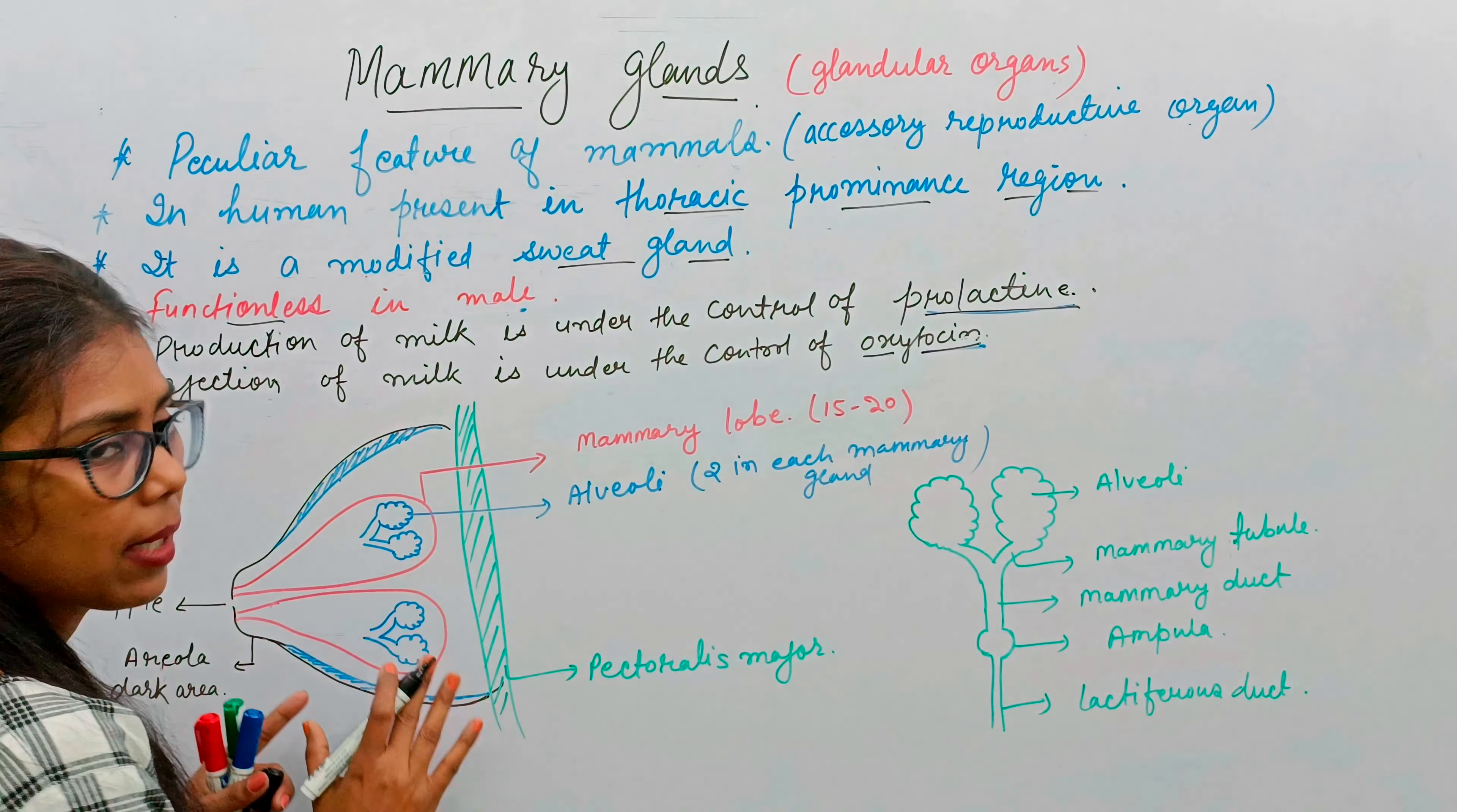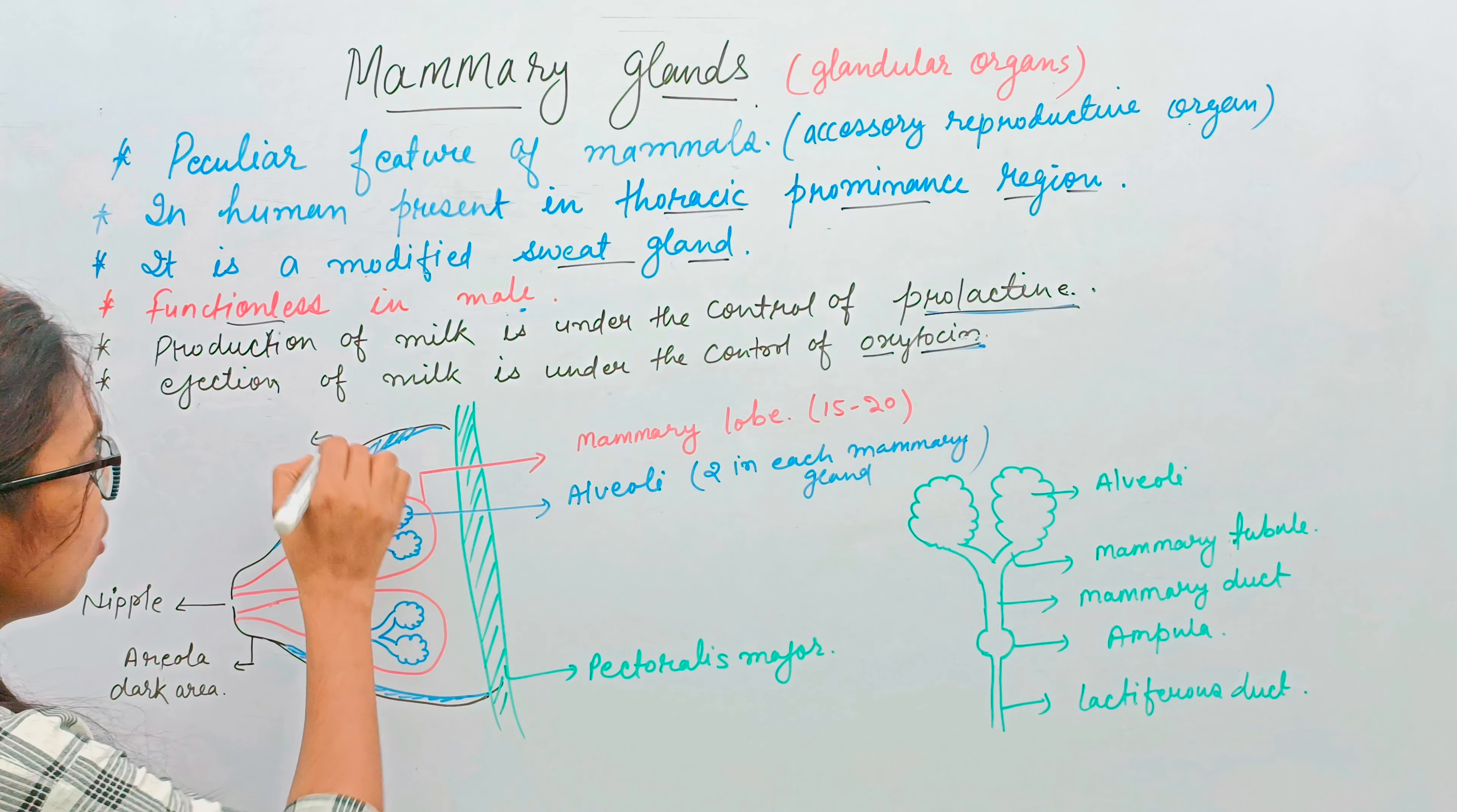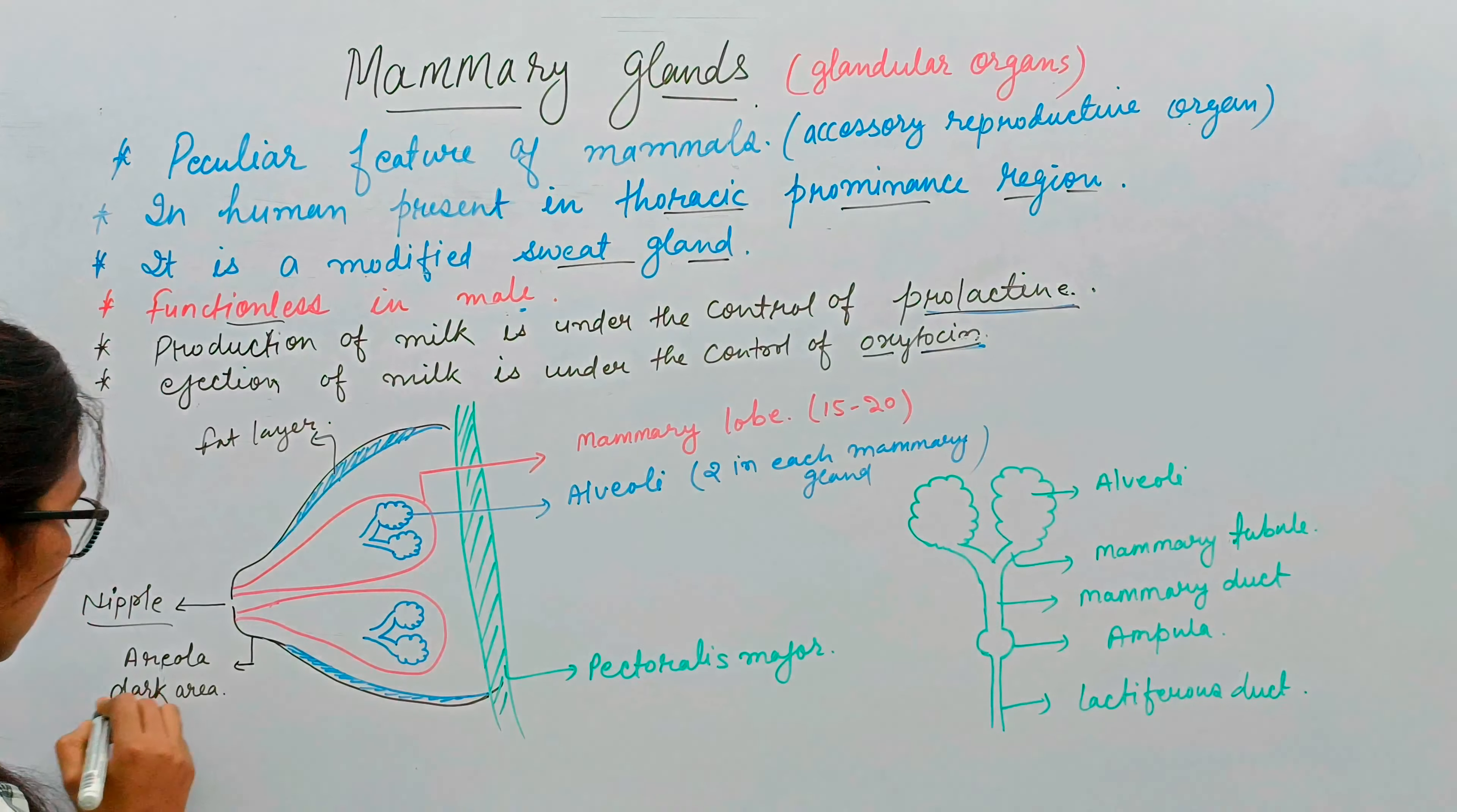This is the diagram of mammary gland. In this swollen part, there are some fat layers. We call the front part, and this front part has some dark area which is called areola.